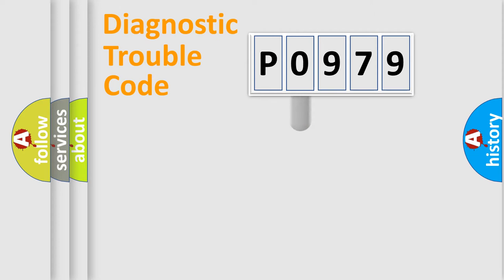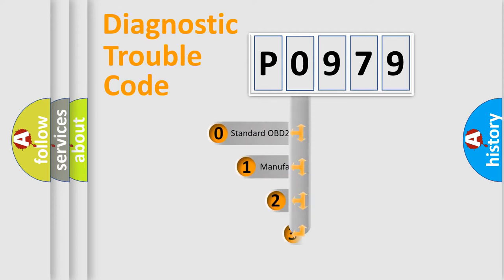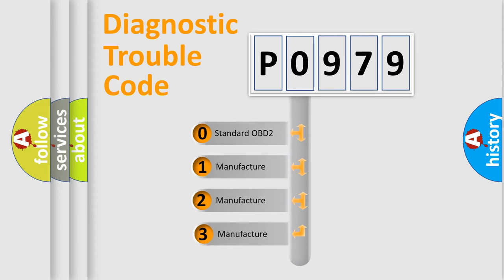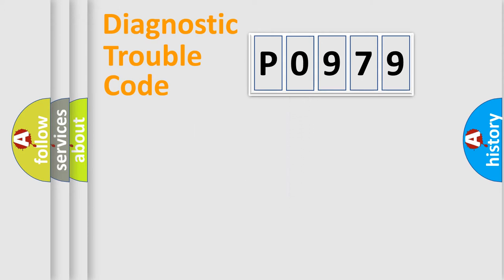This distribution is defined in the first character code. If the second character is expressed as zero, it is a standardized error. In the case of numbers 1, 2, or 3, it is a more prestigious expression of the car-specific error.